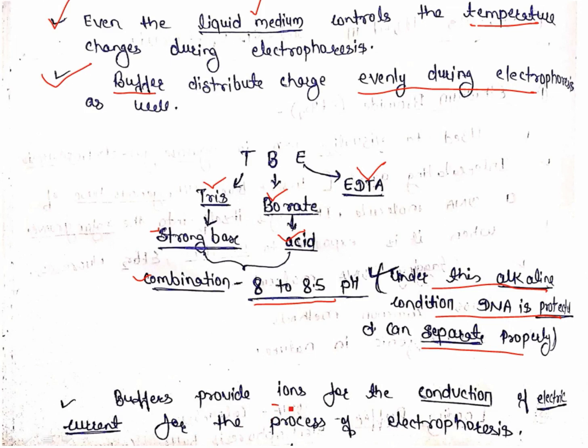Buffer provides ions for the conduction of electric current for the process of electrophoresis — this is very important. When we turn on the power supply, we need to verify that current is actually flowing. The buffer — TAE or TBE — provides ions that enable electrical conduction. As the name 'electrophoresis' implies, it is the movement of ions; those ions come from the buffer. So buffer provides ions for the conduction of electric current for electrophoresis.